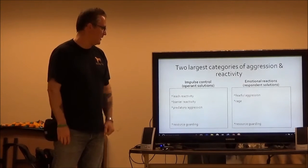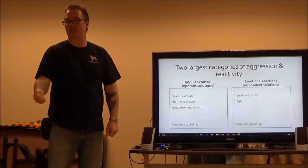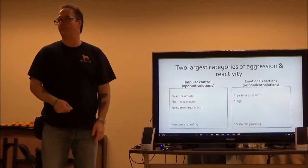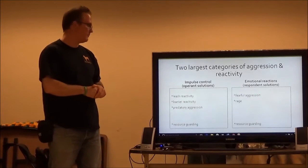And that would include leash reactivity. That's where your dog is thrashing on the leash. If they were loose they'd be fine, but when they're on leash and they see a dog they pull you across the street, bark and whine.